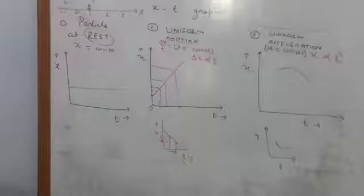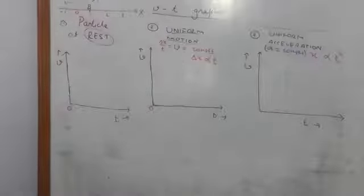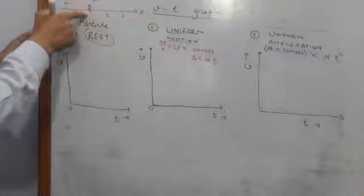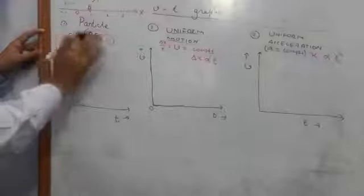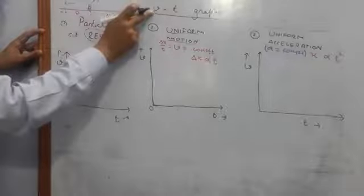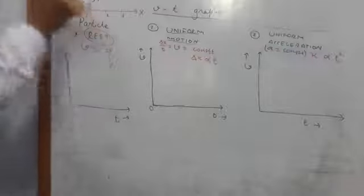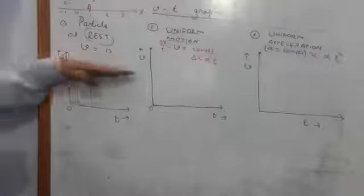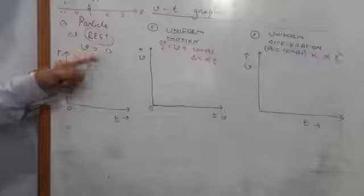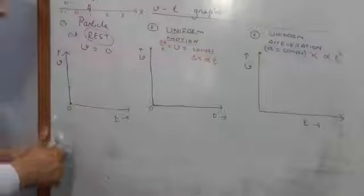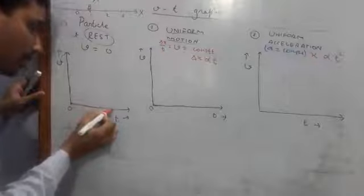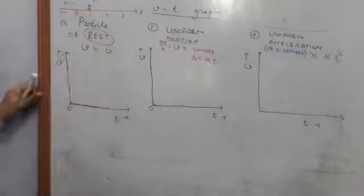That is all about the position-time graph. Now let's switch over to the velocity-time graph. For a particle at rest, since it does not move, its velocity at any instant will always be 0. That is a constant — a special constant equal to 0. If it is constant, the graph must be a straight line parallel to the time axis. Since it starts from 0, we draw a line parallel to the time axis along the t-axis. This is the v-t graph for a particle at rest.